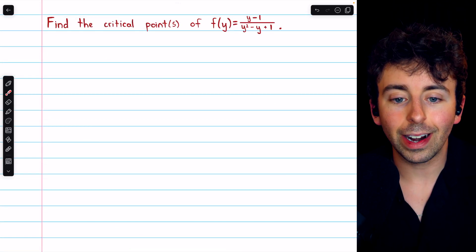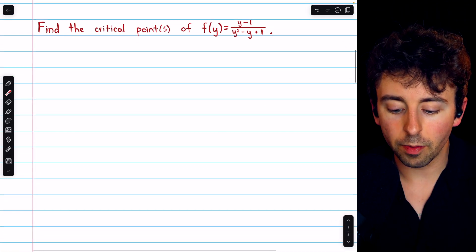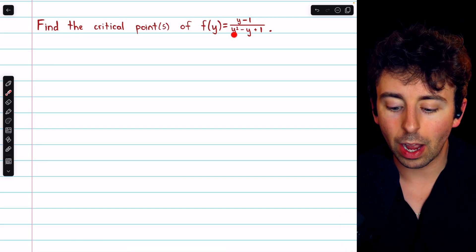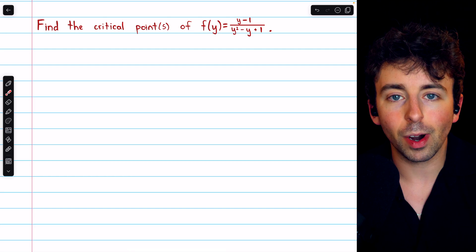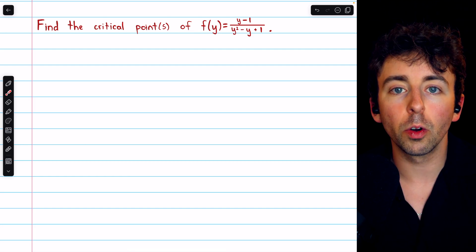Here's another problem to try for practice. Find the critical points of f(y) = (y-1)/(y²-y+1). To do this, you'll need the quotient rule: f'g - g'f all over g².